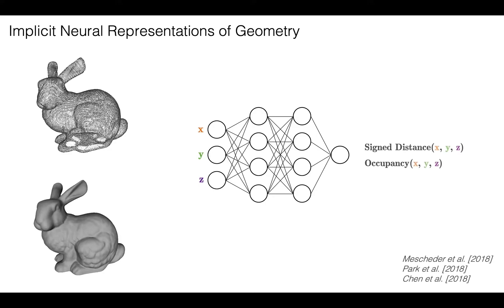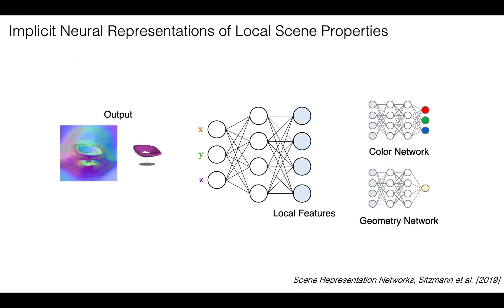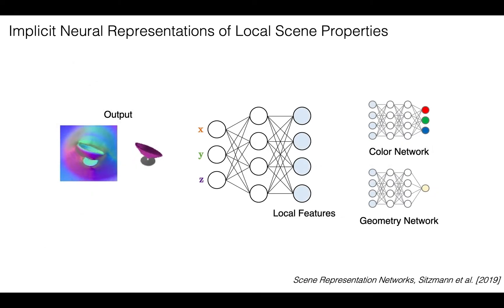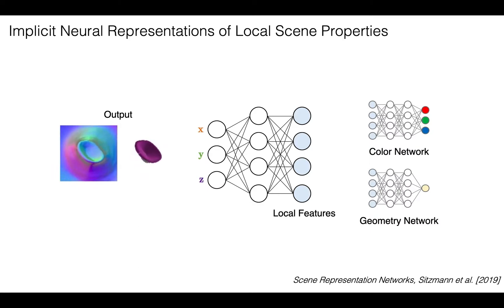Initially, these representations were only for geometry, such as signed distance or occupancy functions. More recently, Sitzman et al. proposed Scene Representation Networks, or SRNs, which map 3D coordinates to feature vectors containing local scene properties. These features are then mapped to color and geometry.